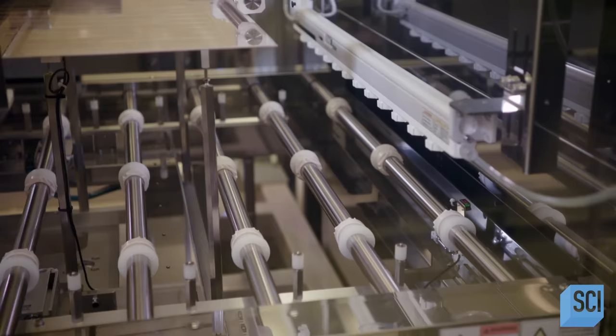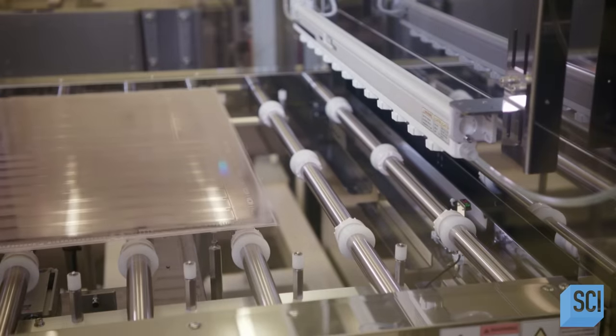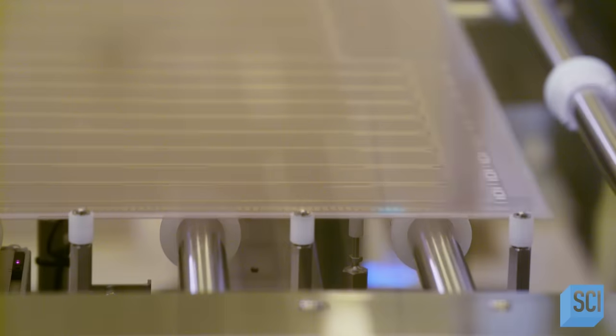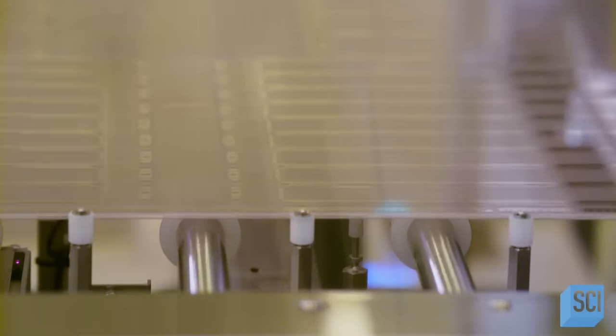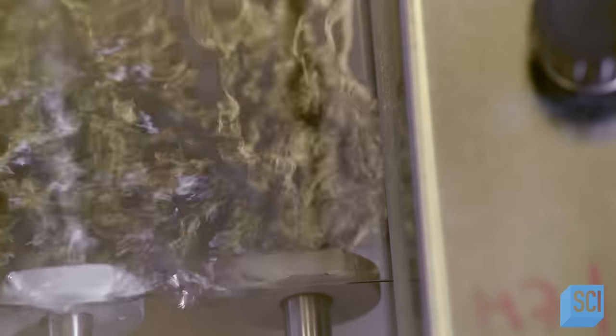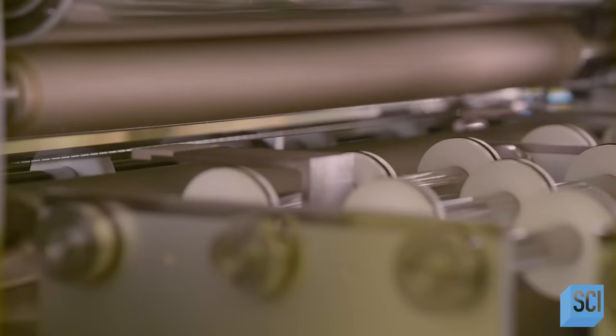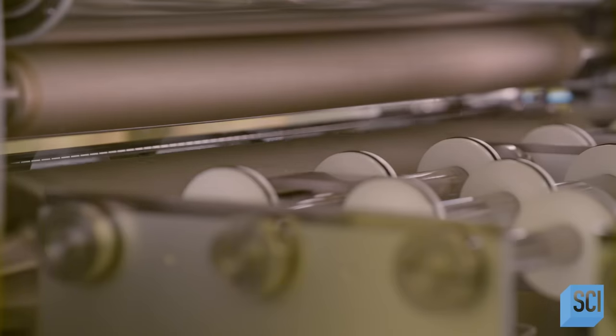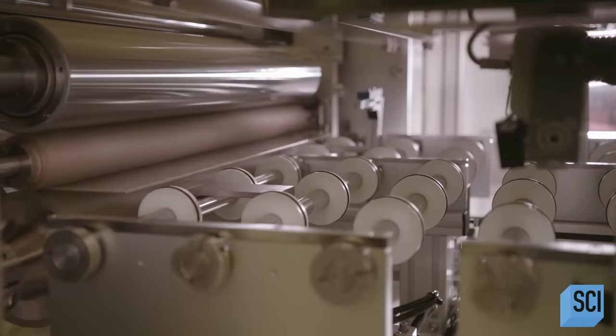The automated system adds layers of semiconductors, electrical isolators, and metal. A rinse of deionized water cleans the coated film, and a blast of air blows off the water. Rollers apply gentle pressure to ensure the film sticks to the glass, even when positioned vertically.